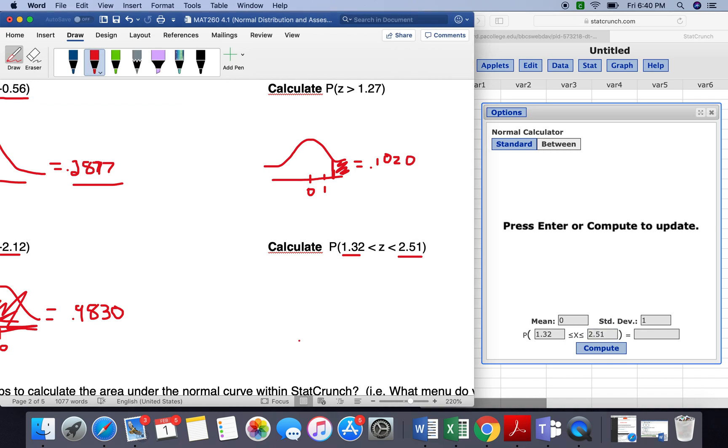And I'm going to draw this out. So for this one, we have 0, 1, 2, and we went in between the 1.32 and the 2.51.